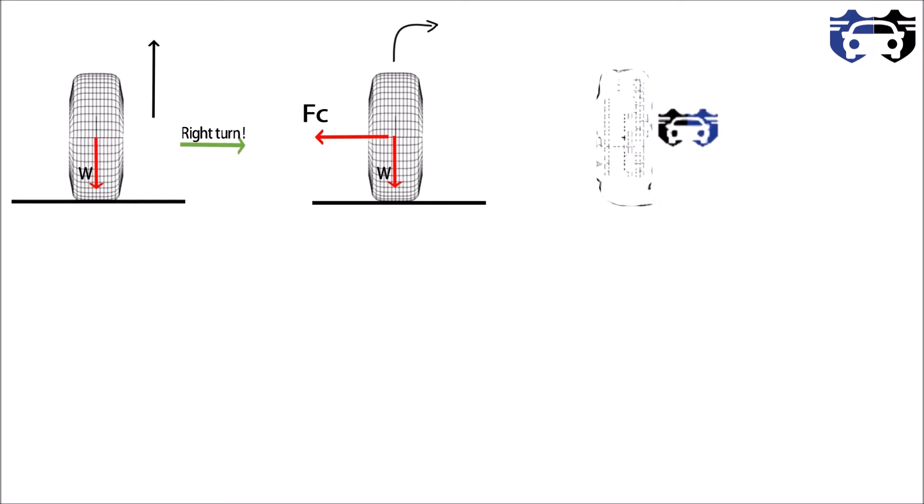And to prevent this skidding, the force is acted at the bottom in the right direction shown by Fy, where Fy is the lateral force. Basically this is the resisting friction force.